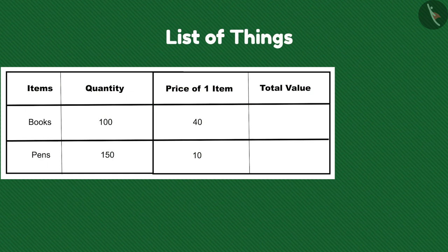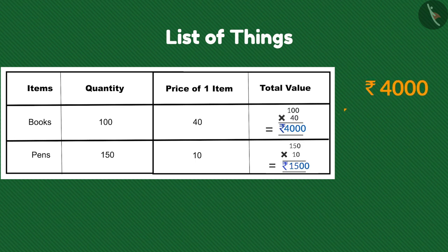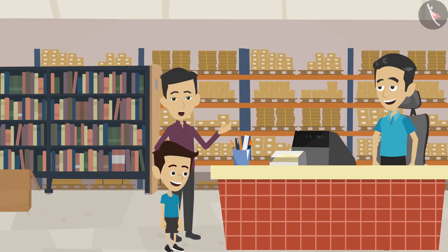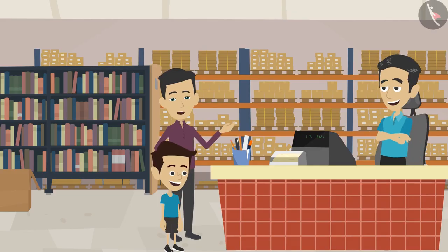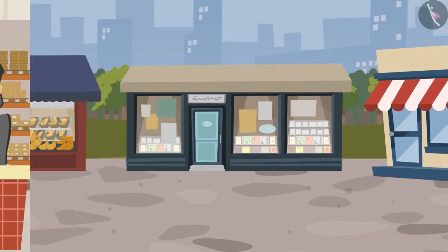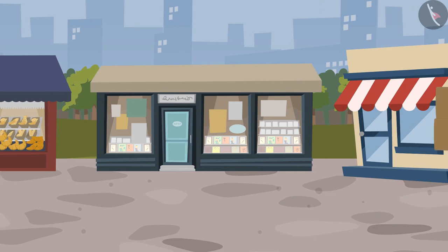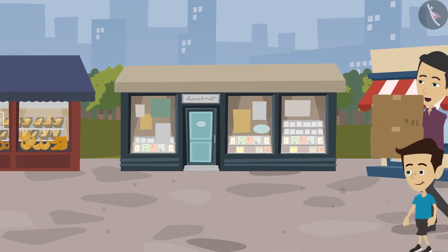The cost of books is 40 into 100, that is 4000 rupees. Cost of pens is 10 into 150, that is 1500 rupees. The total cost is 4000 plus 1500, that is five thousand five hundred. Yes, that's how we find out the total cost. Okay, now take one fourth of the books we bought and give them to your uncle and ask him to pay rupees 1500 for them.